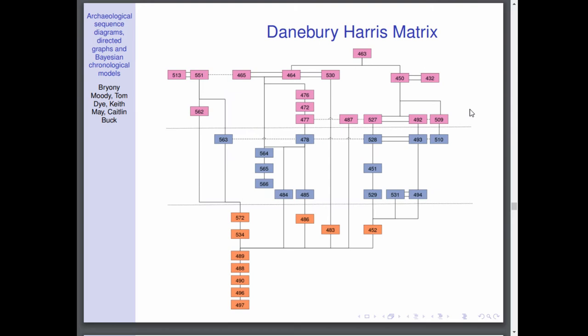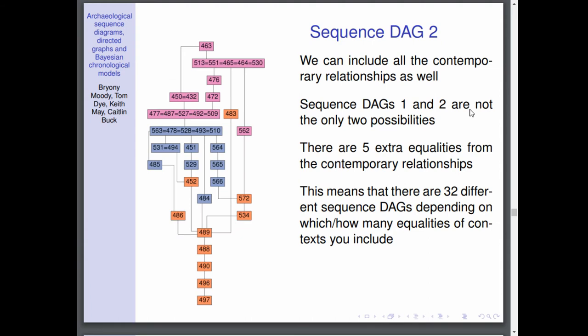So going back to the matrix again, we've got some other relationships here. We've got these contemporary relationships and obviously they're also useful when doing chronological modeling. So this leads to sequence DAG 2. Here we've included both the once whole context relationships and the contemporary relationships. This again changes the structure of the DAG.